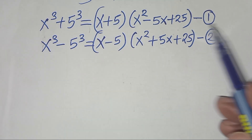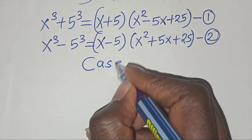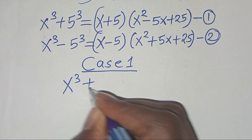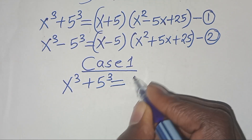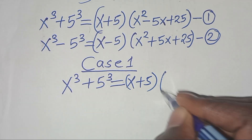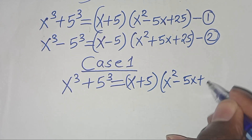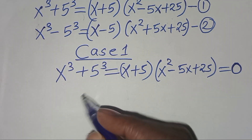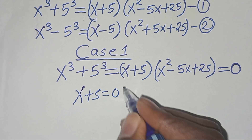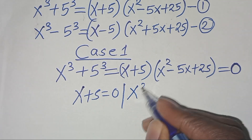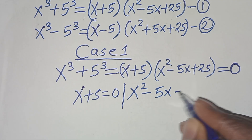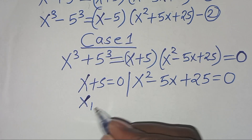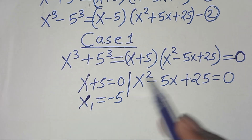Let's start with Case 1. We have x³ plus 5³ equal to (x plus 5)(x squared minus 5x plus 25) equals 0. We have two parts: the first part is x plus 5 equals 0, and the second part is x squared minus 5x plus 25 equals 0. This implies the first value x1 equals minus 5.